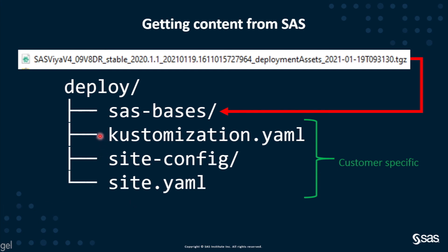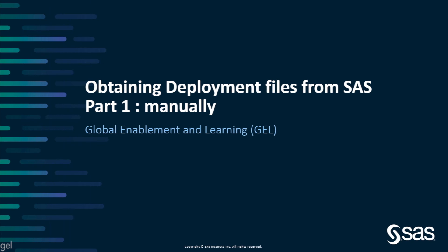The other files in this folder, like customization.yaml, siteconfig, and site.yaml, will be customer-specific. Please refer to the official deployment documentation to understand what they are used for. This is the end of the presentation. If you want to automate this process, please watch the second part of the video, which explains how to use the SAS API and the Order CLI to download your deployment assets from the command line. Thank you.